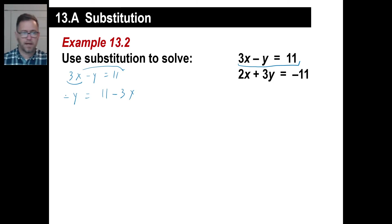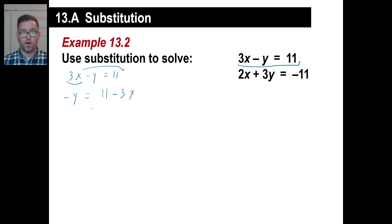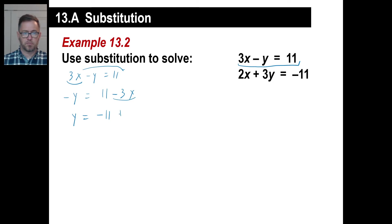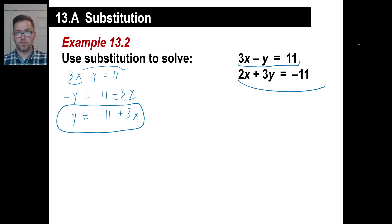We don't want a negative y — we want a positive y. If we divide everything by negative 1, this is our brand new equation: y equals 11 divided by negative 1, which is negative 11, and negative 3x divided by negative 1 is positive 3x. So y equals negative 11 plus 3x. This is the equation we're going to plug into the second equation.